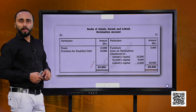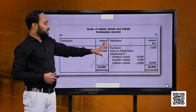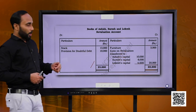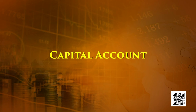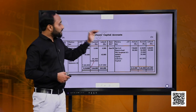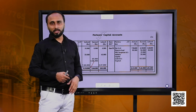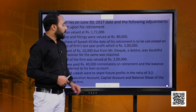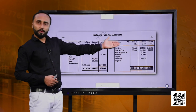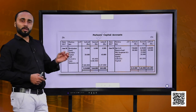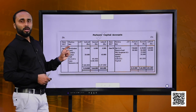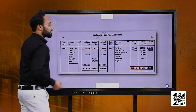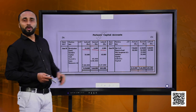This is our revaluation account in this question — a simple short account giving a loss of 20,000, debited to the partners in their old ratio of 5:3:2. Now we will prepare the capital account. First, write down the opening balances of the partners from the balance sheet. Then write down the revaluation loss: 10,000 for Ashish, 6,000 for Suresh and 4,000 for Lokesh on the debit side.